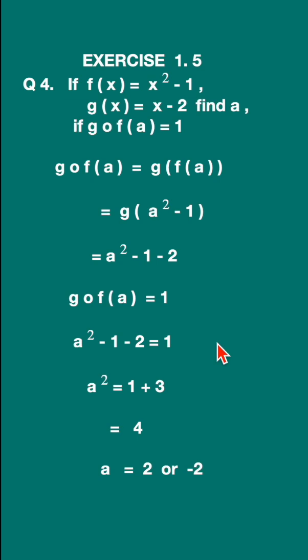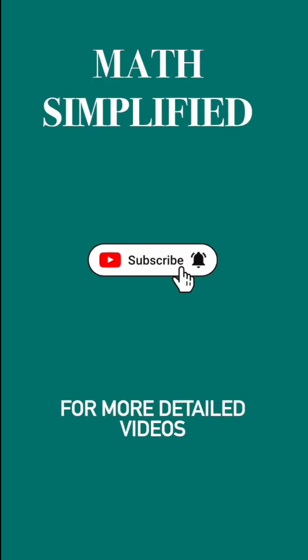So a squared minus 3 equals 1. Take all this to the right side: a squared is equal to 1 plus 3, that is equal to 4. So a is equal to 2 or minus 2.